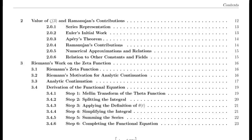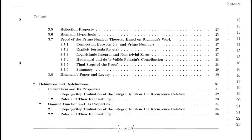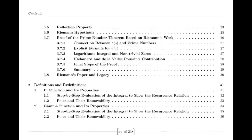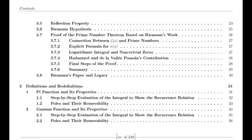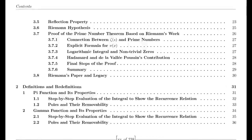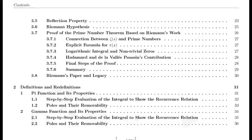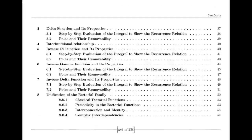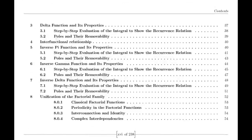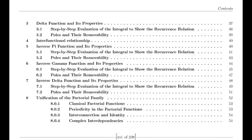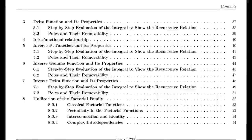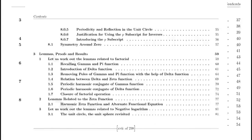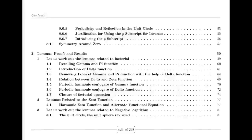As the century progressed, the zeta function found its way into various fields beyond pure mathematics — physics, probability theory, and even quantum mechanics. Its complex interplay with randomness and order sparked new insights and debates among scholars, revealing that the quest to understand prime numbers was not merely an academic pursuit but a journey into the very foundations of the universe.